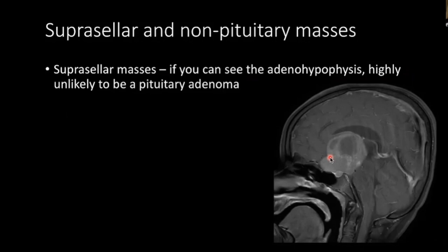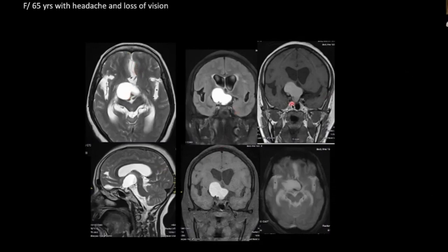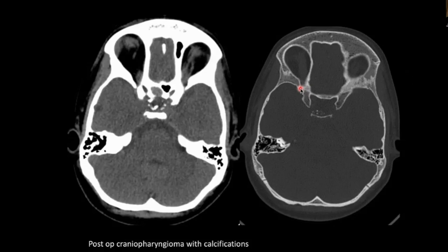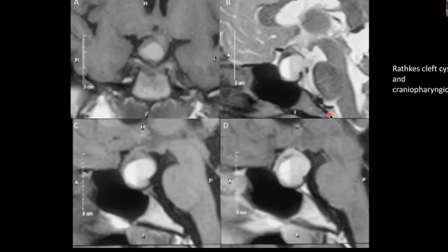Macroadenomas are common, but if the adenohypophysis is visible separately from the suprasellar tumor, this is not a macroadenoma — it is something else. Always look for differential enhancement of the adenohypophysis on post-contrast images or differential signal on T2. Here we see a suprasellar cystic lesion that is T1 hyperintense with blooming on gradient sequence — a 65-year-old lady with headache and loss of vision. This is a craniopharyngioma. Craniopharyngiomas can also show multiple tiny cysts, heterogeneous enhancement, and calcification.